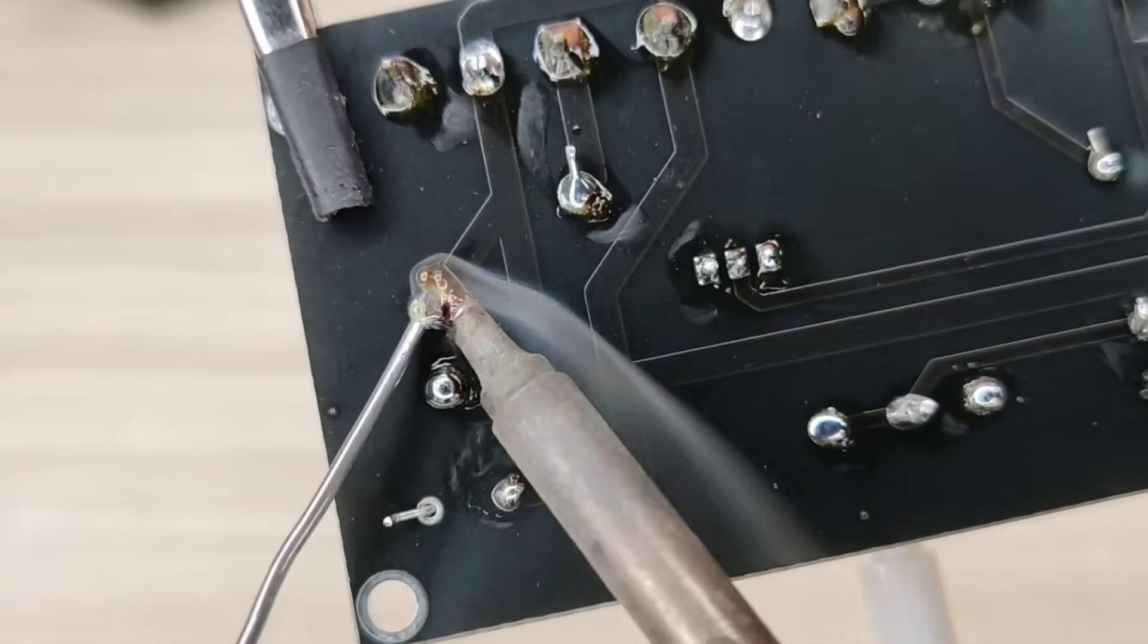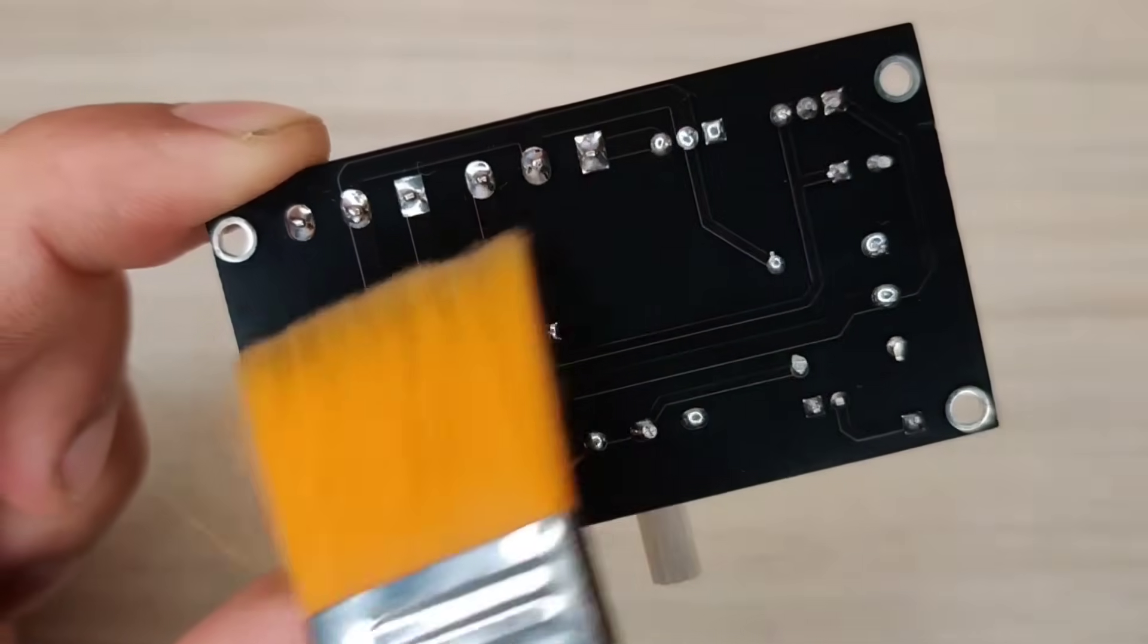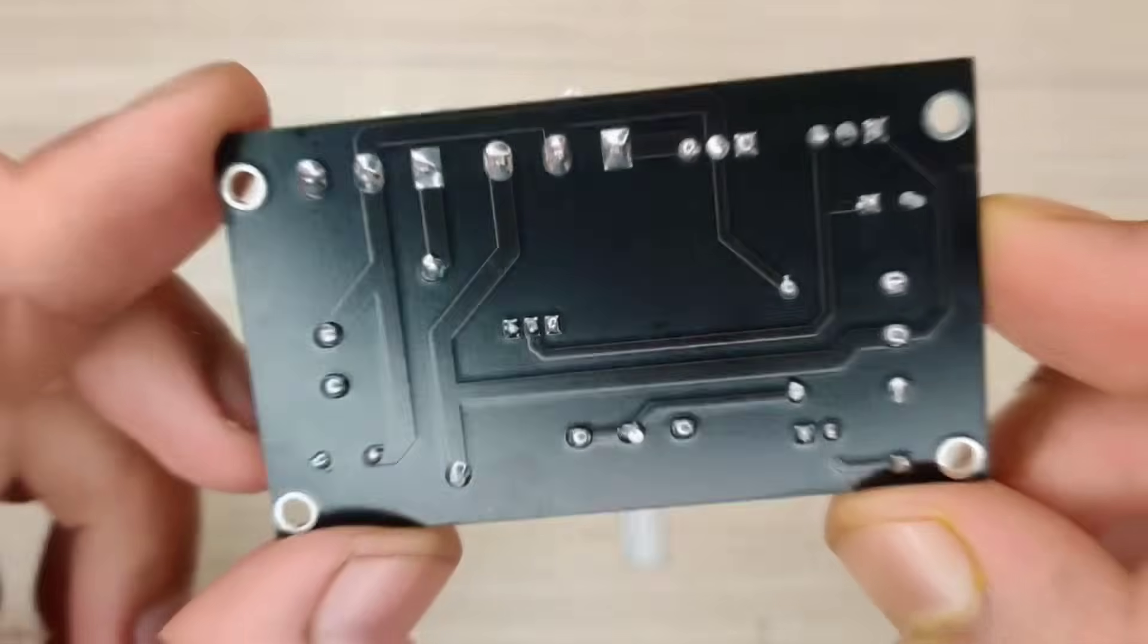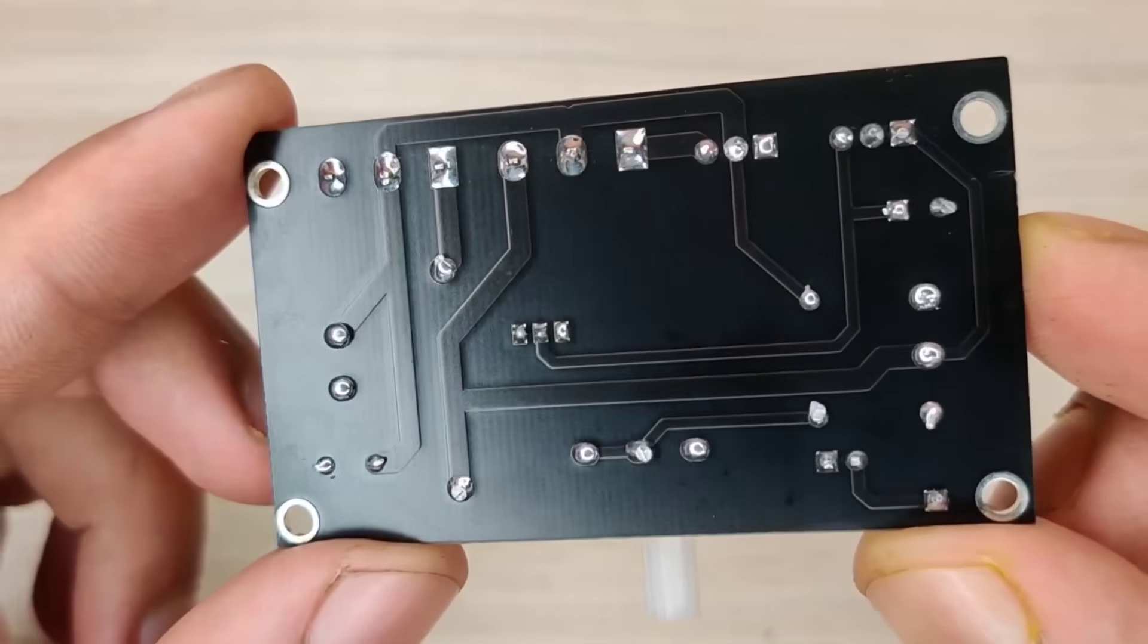And after spending some time with the soldering process, I cleaned the PCB with isopropyl alcohol. And here our PCB is looking nice and clean.